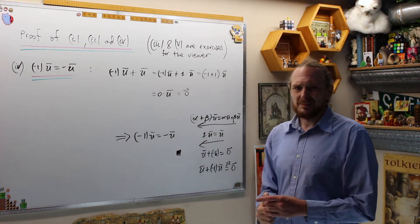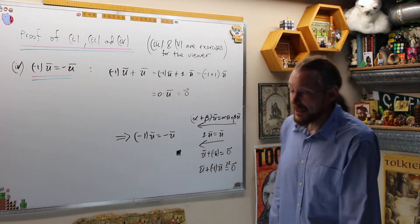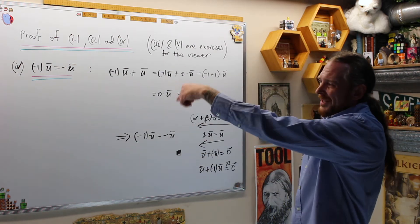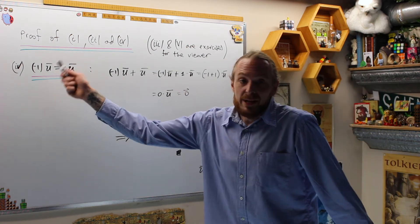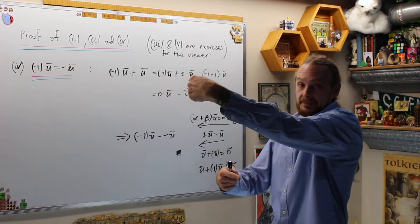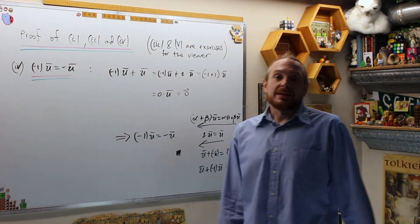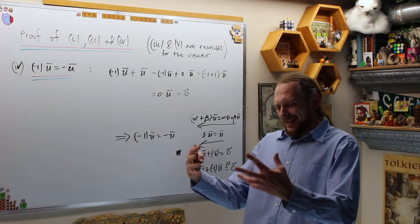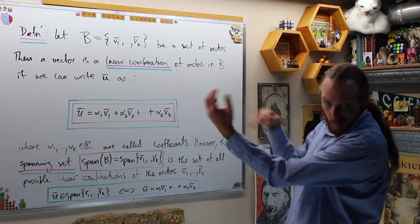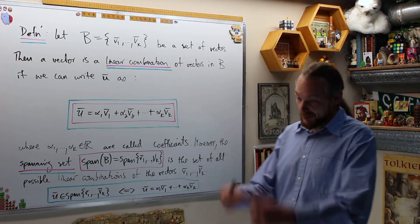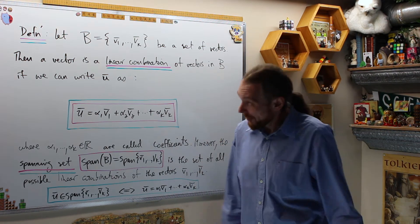Pause and meditate on this — this is the structure axiomatically. Inverses are unique, and the additive inverse of U is negative one times U. Scalar multiplying a vector by negative one is like flipping it in space. Now what we're going to do is linear combinations and spanning sets. We're going to throw both definitions into one. You can pause to go back, but we're going to do linear combination and spanning set all in one go.